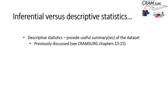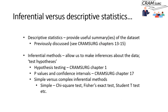The first thing to explain is the difference between inferential and descriptive statistics. Descriptive statistics provide useful summaries of the data in front of you — we've talked about this in previous episodes, and it might be worth reviewing CRAM search chapters 13 to 15, where we talk about how to describe a dataset. Inferential methods essentially allow us to make inferences about the data — they enable you to test the hypothesis in front of you, based on your clinical or research question. We spent some time talking about hypothesis testing, p-values, and confidence intervals — it might be useful to go back and review those if you're not comfortable with these concepts.